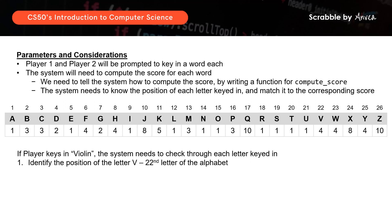So first, identify the position of the letter V, where V is the 22nd letter of the alphabet. Then, based on the score table provided, it will determine that the letter V scores 4 points. So up to this step, the score is 4. Then, it moves on to the next letter,